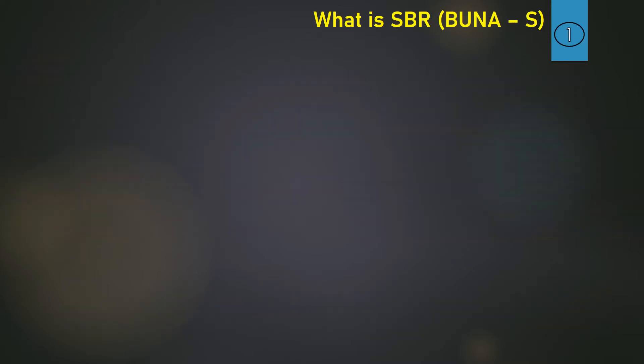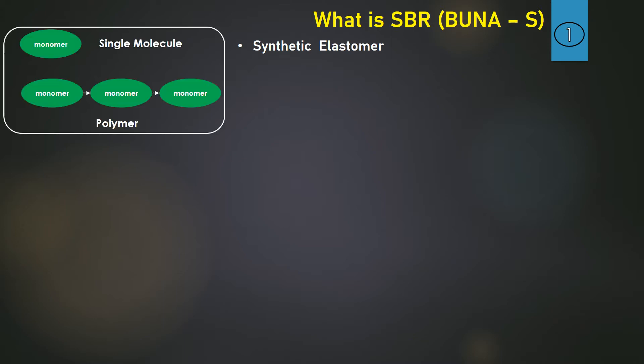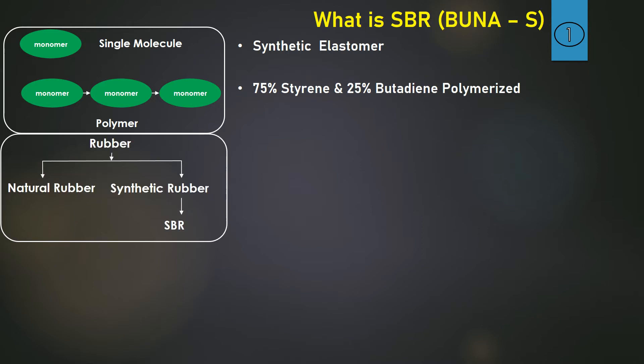So what is SBR? It's a synthetic elastomer. Every single molecule is called a monomer, and multiple monomers connected through a chain is called a polymer. Polymers which have a spring-back nature to their original shape are called elastomers — that is, materials with elastic nature. Elastomers include natural rubber and synthetic rubber as two categories. SBR comes under synthetic rubber because it is made artificially through chemical processing.